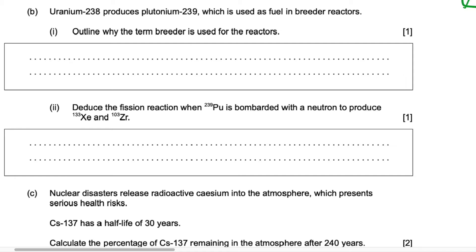Uranium-238 produces plutonium-239, which is used as a fuel in breeder reactors. When you see the term 'breeder,' you can think of something that produces something. The term is used for these reactors because they produce more fissile materials than they consume, and fissile materials refer to materials that can sustain a chain reaction.